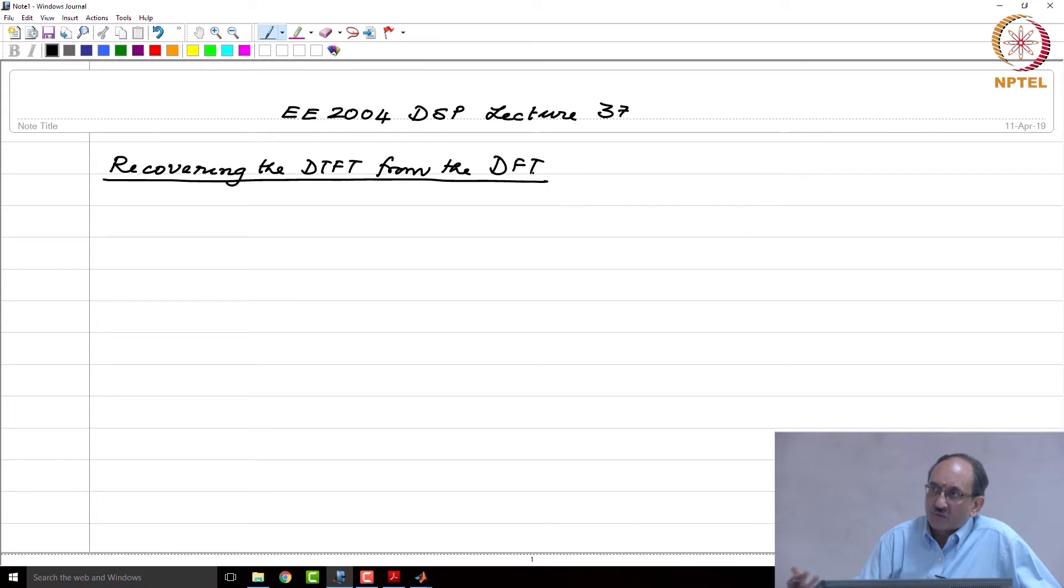There is no aliasing in the time domain from the frequency domain samples. Namely, from the DFT you should get back the underlying DTFT, just like in sampling in the time domain. From the samples you can get back to the underlying continuous time signal, and the way you did that was you used an ideal low pass filter which corresponded to sinc interpolation. Now, let us see what kind of interpolation comes about here and what are the similarities and differences.